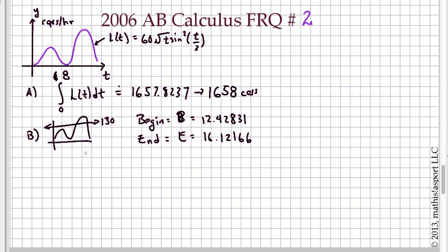So those are the intersection points. The interval when L(t) exceeds or is equal to 150 is from the time from B to E.